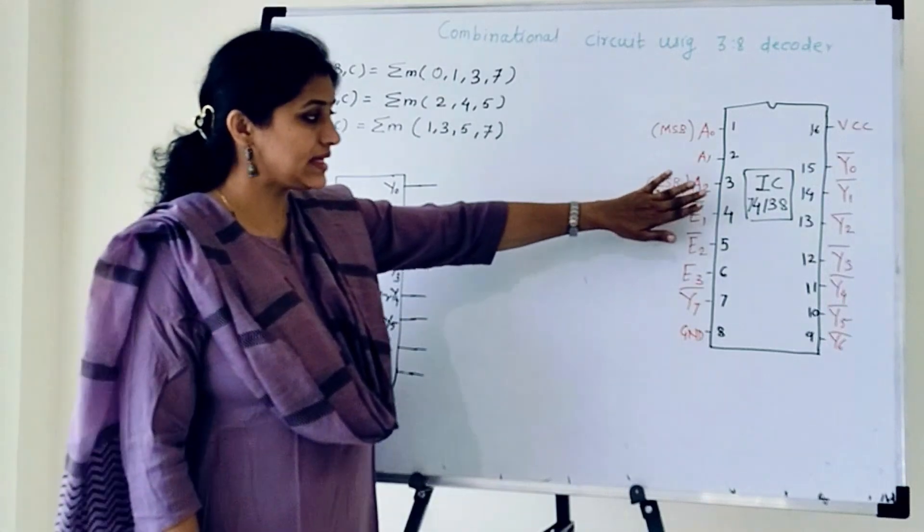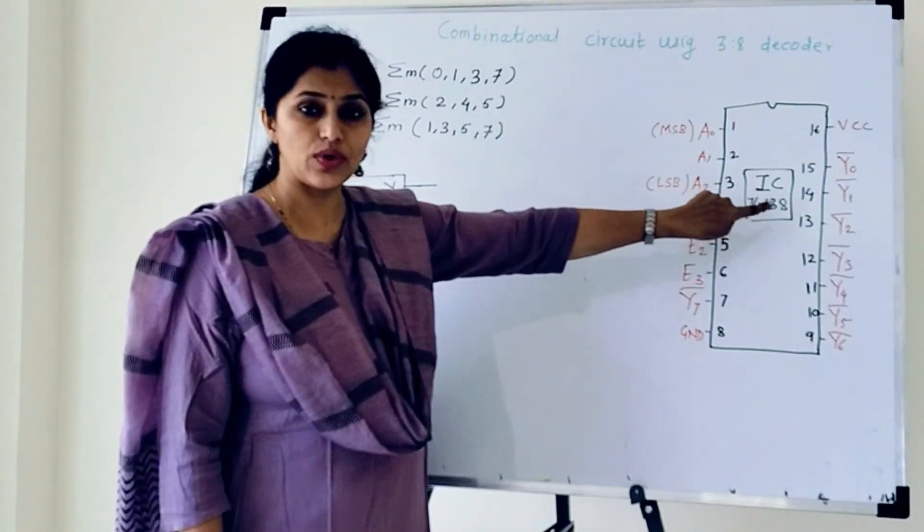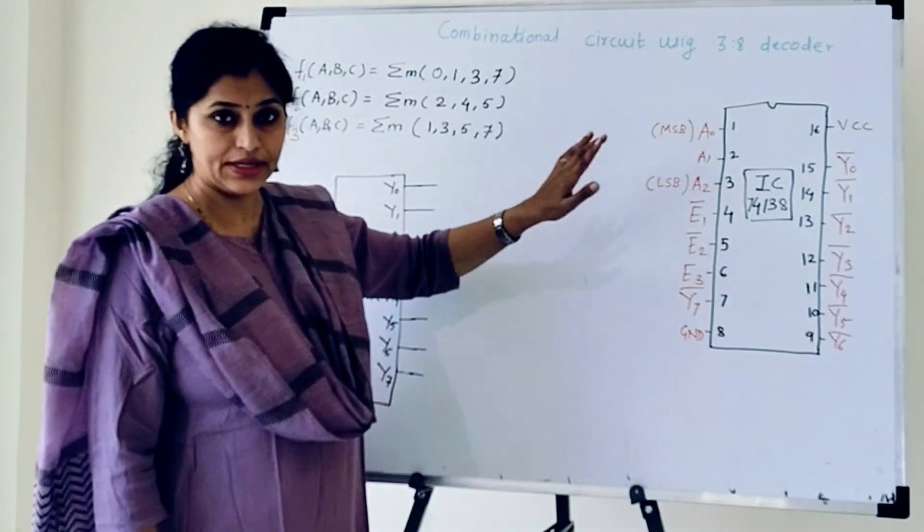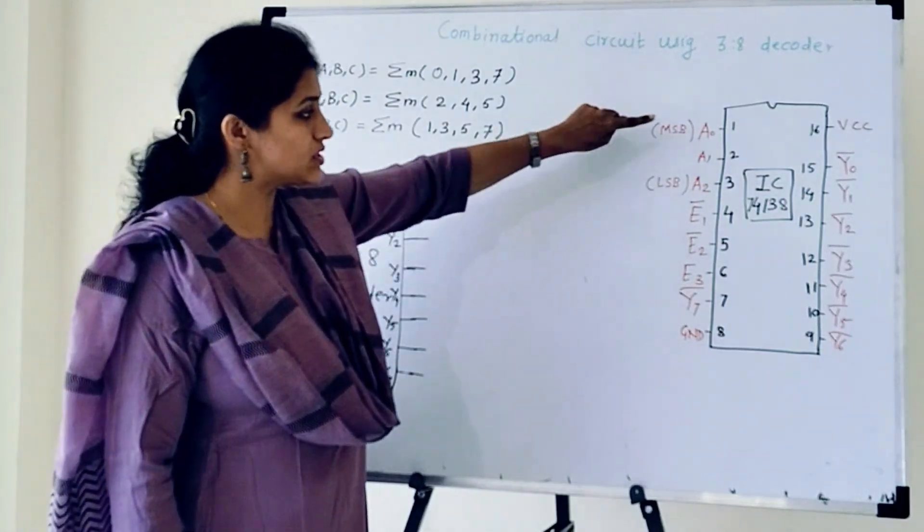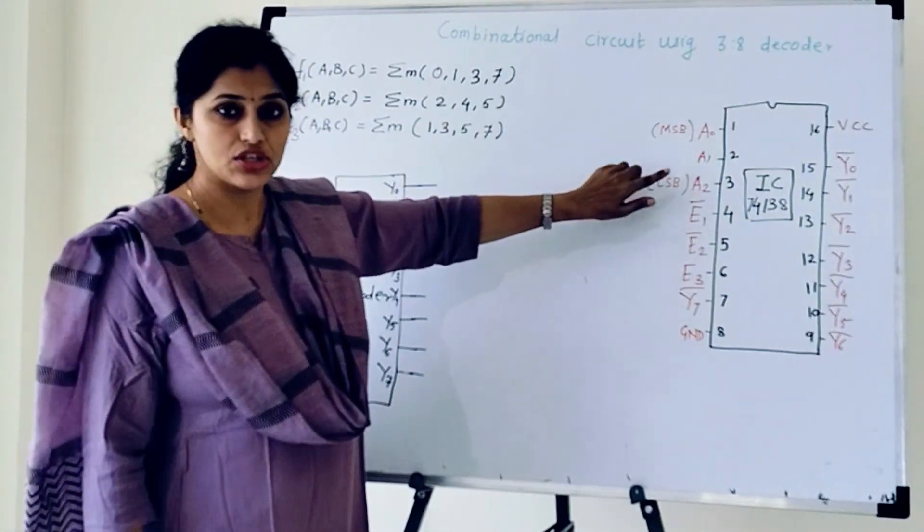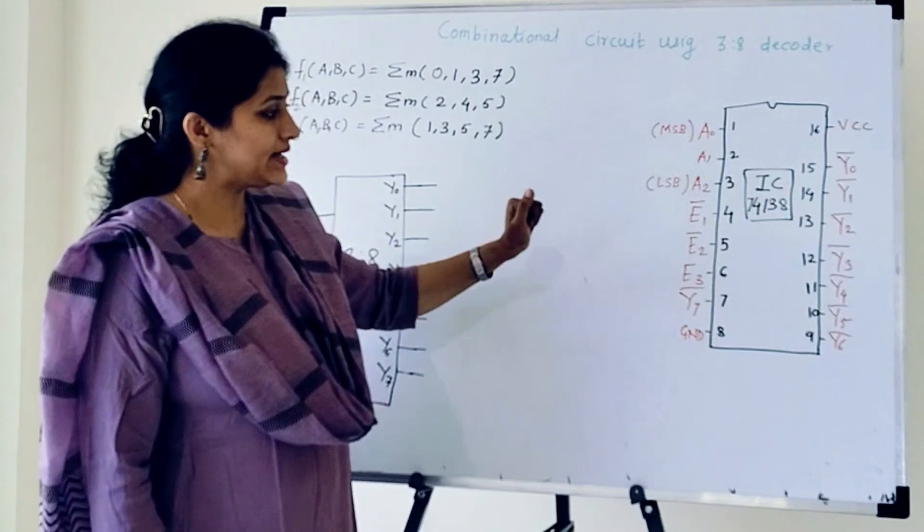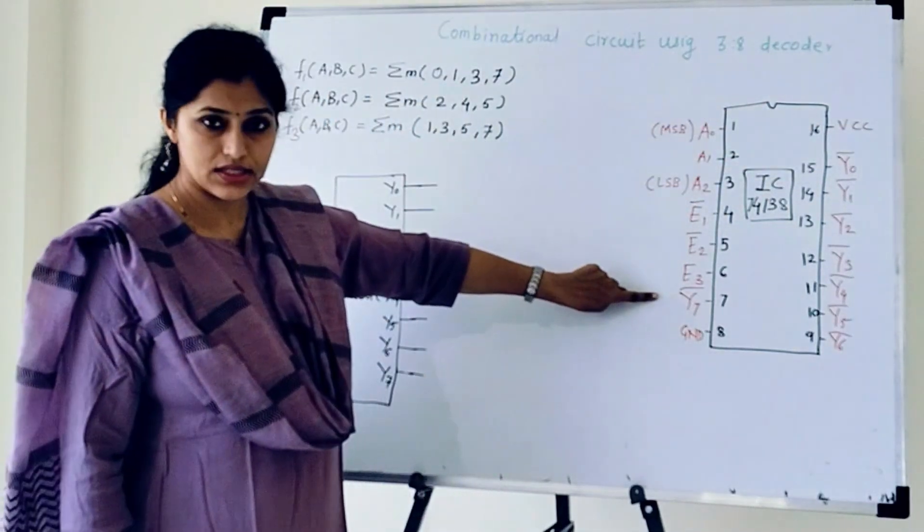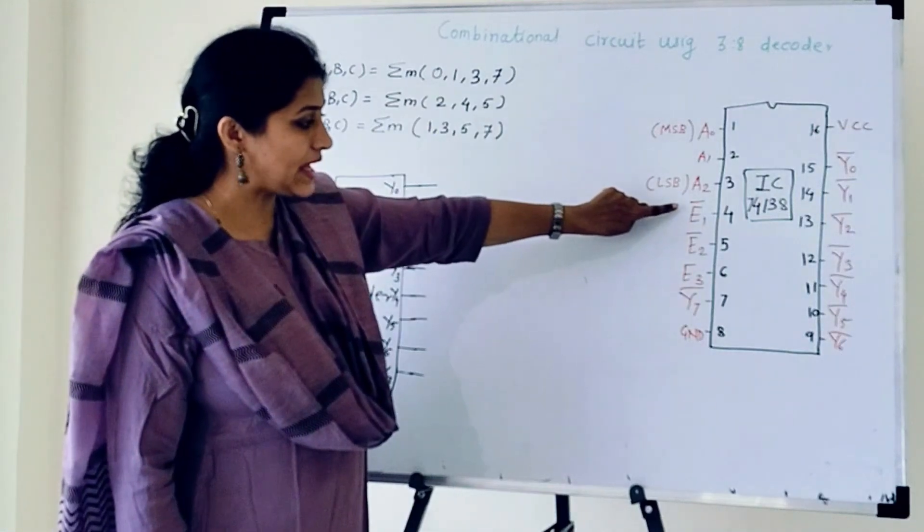So here I have taken an example of IC74138. So 138 is 3-to-8 decoder, it means it has 3 inputs: A0, A1 and A2. A0 is least significant bit, A2 is most significant bit, and it has 8 outputs from Y0 to Y7 and 3 enable pins.